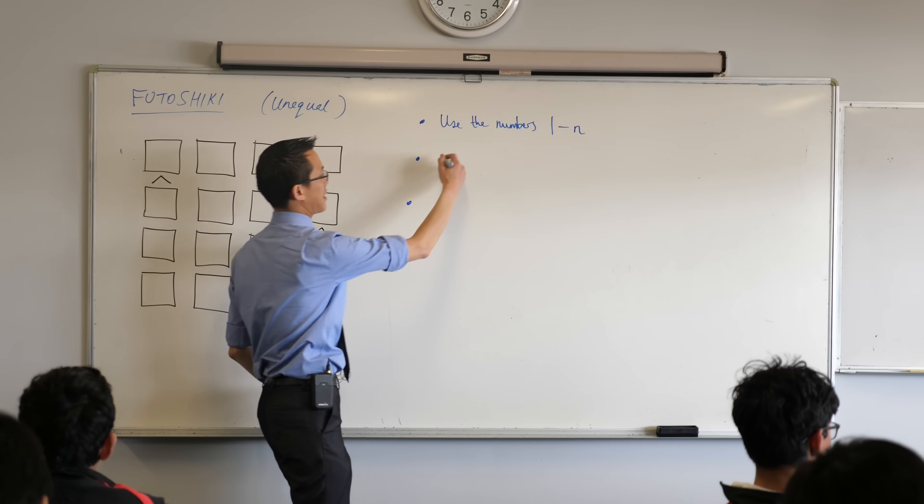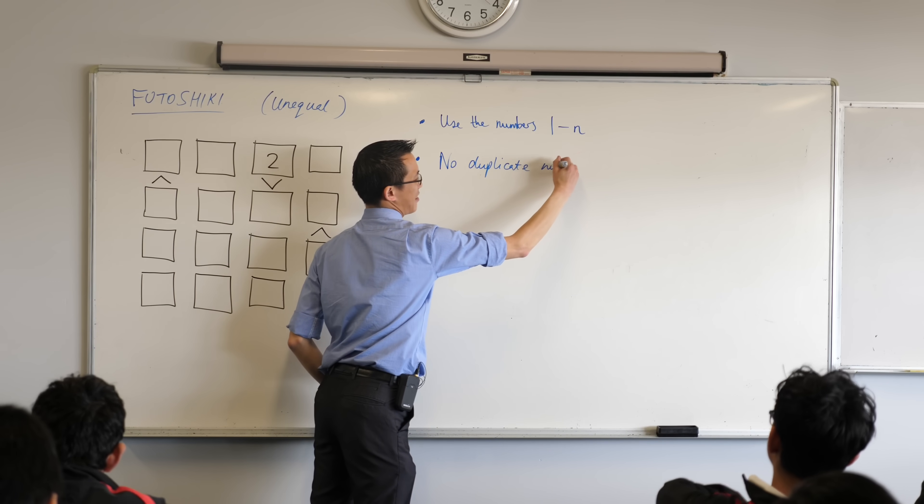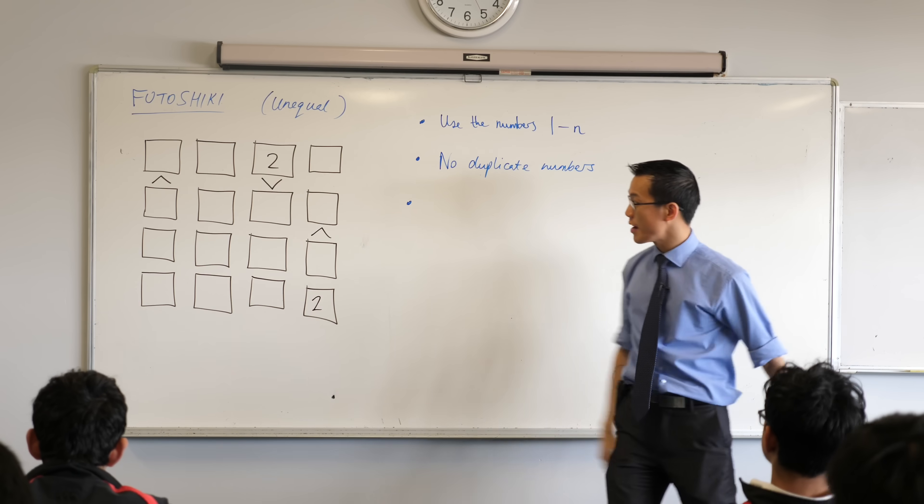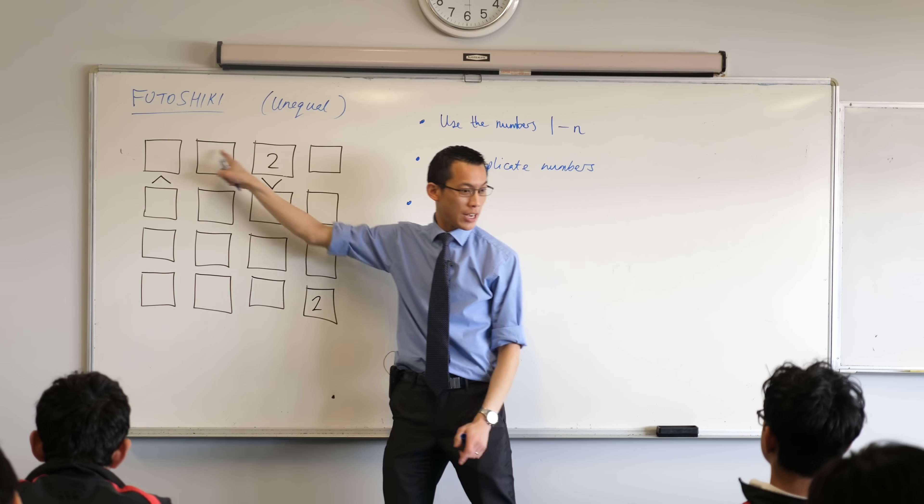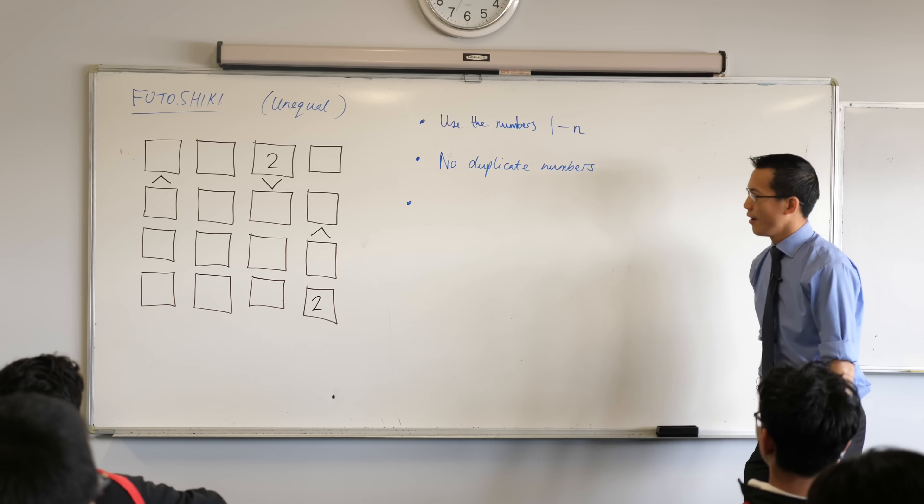The second rule is, again, like Sudoku, there are no duplicate numbers in the rows or the columns. So we're using the numbers one through four in here, right? You can see the two that appears here means that there isn't a two anywhere else in that row and there isn't a two anywhere else in that column. Yeah? So far so good?